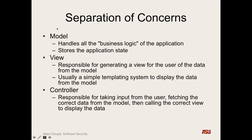The controller takes input from the user, fetches the correct data from the model, and calls the correct view. The great thing is I can have different views for different clients — if you're accessing on a web browser, the controller can say 'here's the HTML view'; if you come to a REST endpoint, I can use the same data but return the JSON view. The model is still the same, authorization checks are the same — the controller should be very simple.